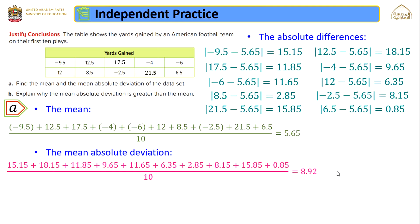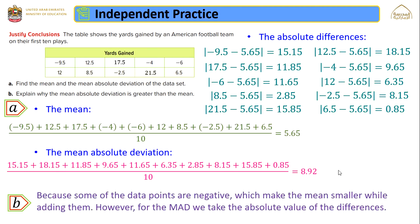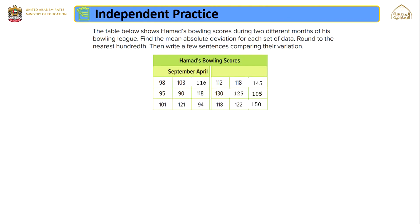The second requirement is to explain why the mean absolute deviation is greater than the mean. The mean absolute deviation is 8.92 while the mean is 5.65. The mean absolute deviation is greater than the mean because some data points are negative, which makes the mean smaller. However, for the mean absolute deviation we take the absolute value of each difference, so negative values increase the deviation without reducing it.